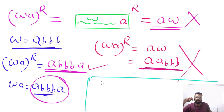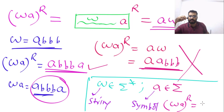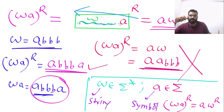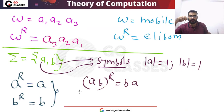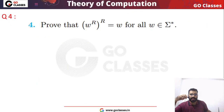So the question requires proving that for any two strings, (UV)^R = V^R·U^R. If W and X both belong to sigma star (they are strings), then WX means W followed by X. When you write WX in reverse order, first X reverses and then W reverses, giving (WX)^R = X^R·W^R. This is an important result you will use many times.